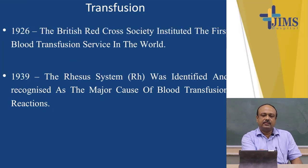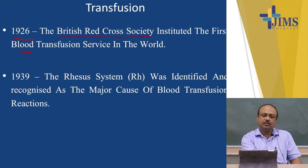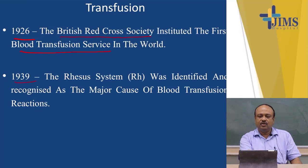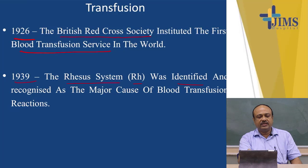In the year 1926, the British Red Cross Society instituted the first blood transfusion service in the world. The RH system was identified and recognized as the major cause of blood transfusion reaction in the year 1939. So it was first the ABO blood grouping system, then the RH system which was identified because it was perceived as a major cause of blood transfusion reaction.